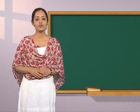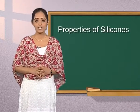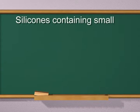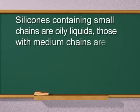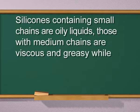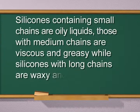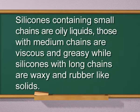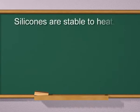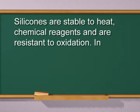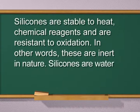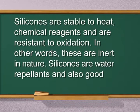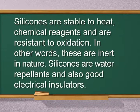Silicones containing small chains are oily liquids, those with medium chains are viscous and greasy, while silicones with long chains are waxy and rubber-like solids. Silicones are stable to heat and chemical reagents and are resistant to oxidation — in other words, these are inert in nature. Silicones are water repellent and also good electrical insulators.